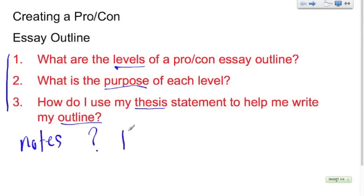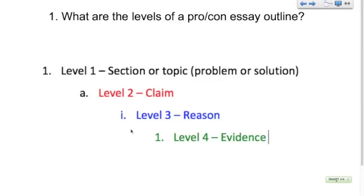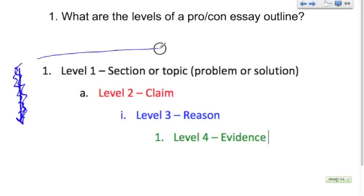Feel free to pause and rewind as much as necessary in order to get all the information you need from this video. So let's move on and talk about the first question: what are the levels of a pro-con essay outline? One thing you want to keep in mind is levels do not move from top to bottom. When we're talking levels, we're talking left to right. So all your level ones are out here to the far left. Level twos are one tab space over. Level threes, two tab spaces over. Level four is three tab spaces over.